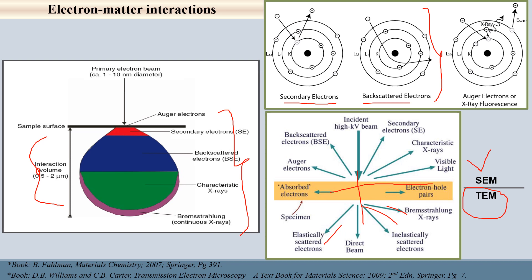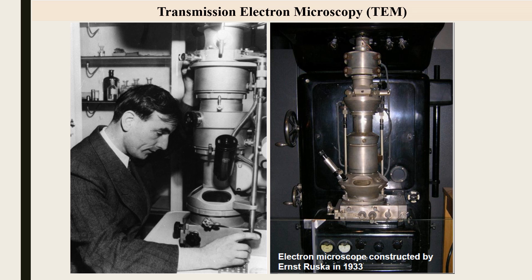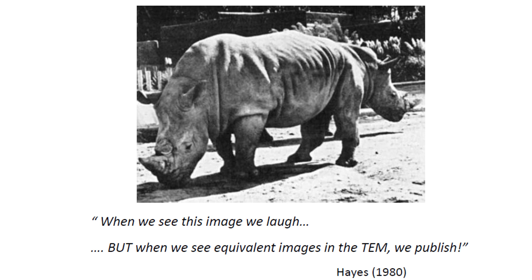Transmission electron microscopy was first developed by Ernst Ruska in 1933, and he was awarded the Nobel Prize for this in 1986. When we see a simple blurry image we laugh, but when we see equivalent images in TEM we publish — because in TEM, unlike SEM morphology, image interpretation is more complicated and requires careful analysis.